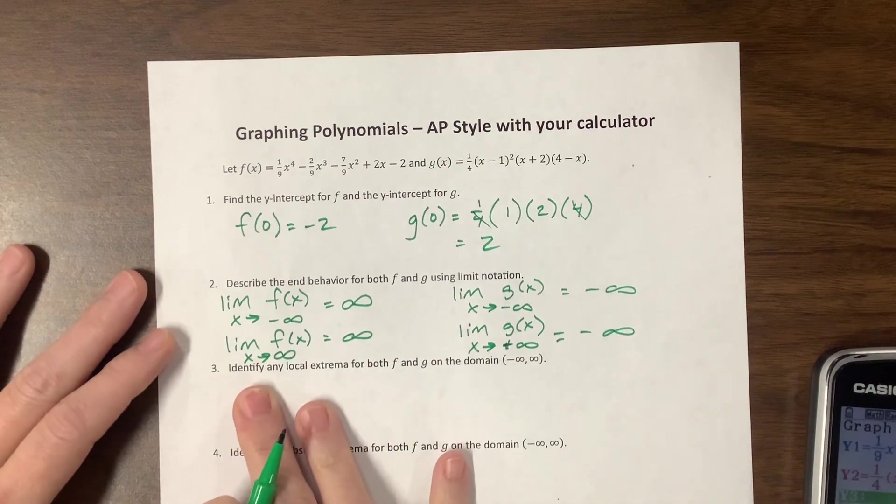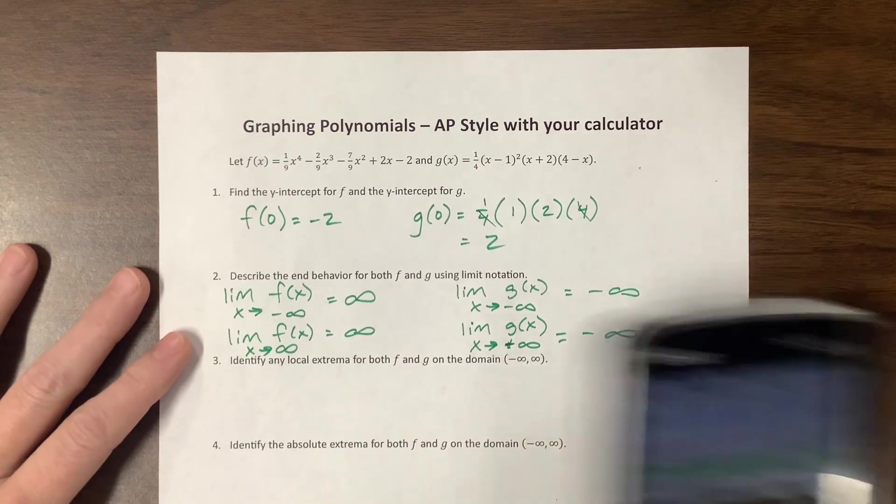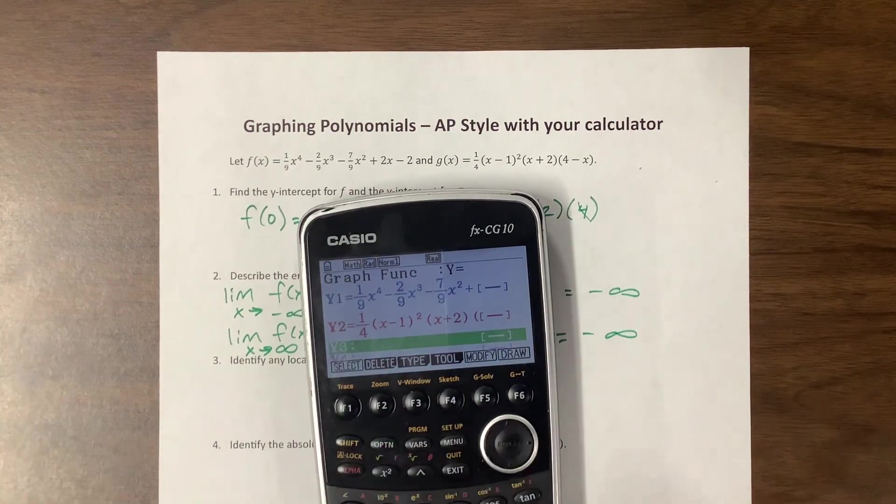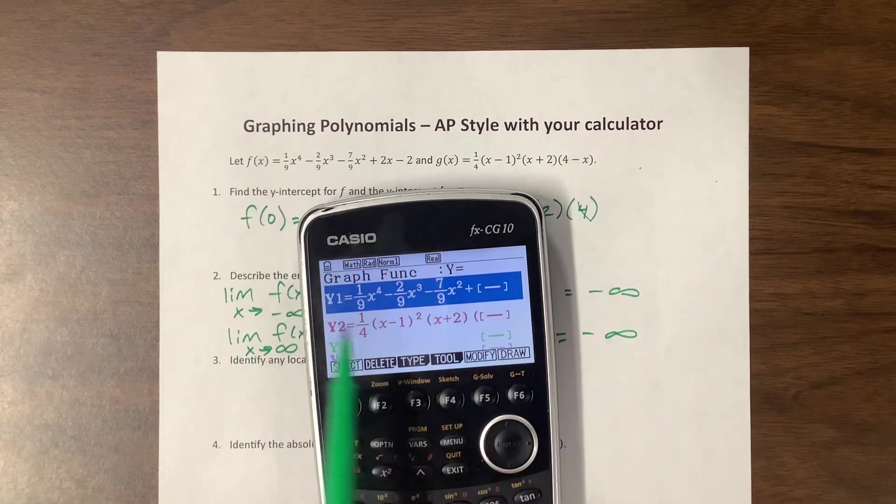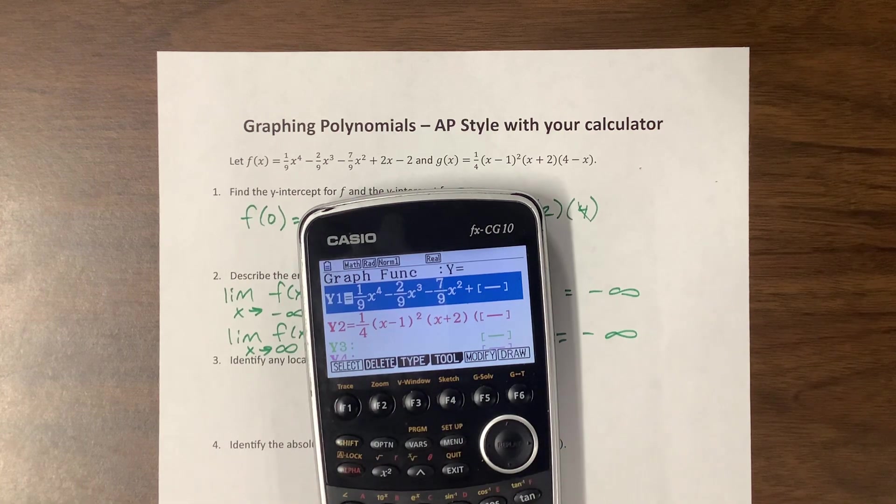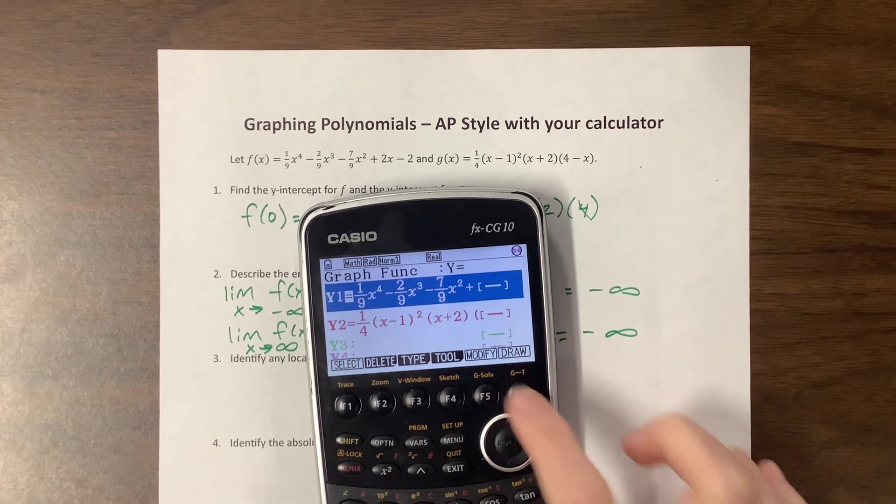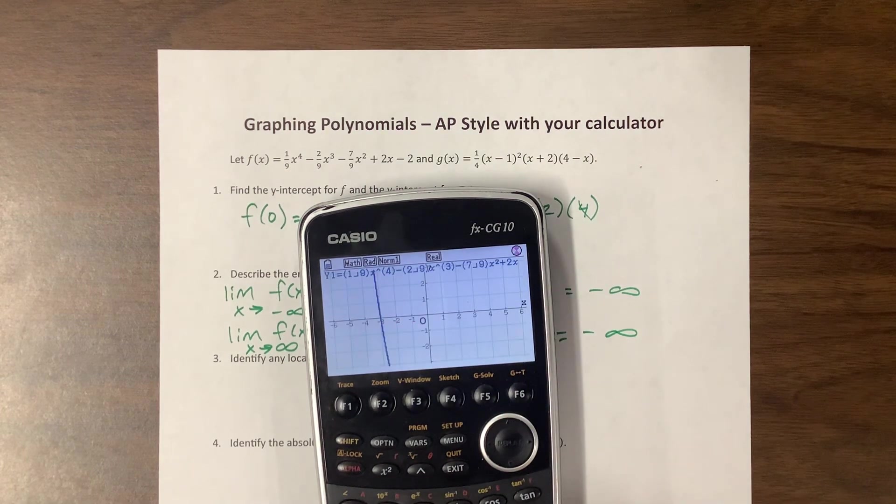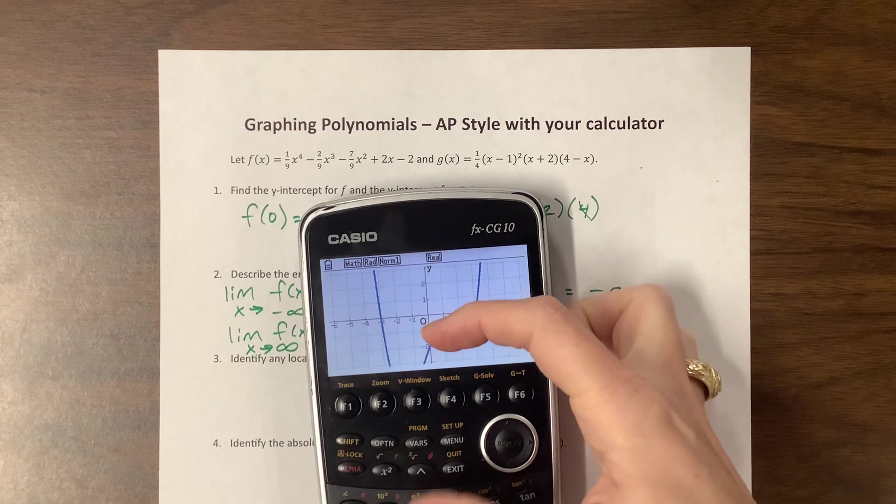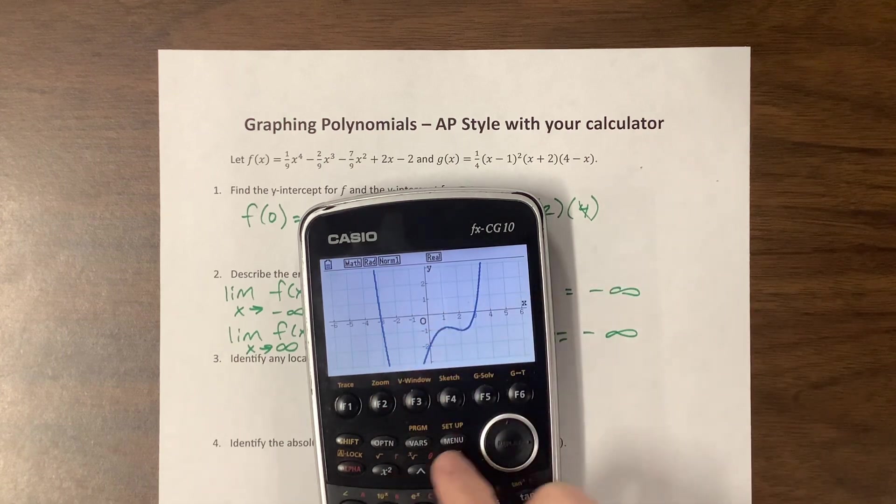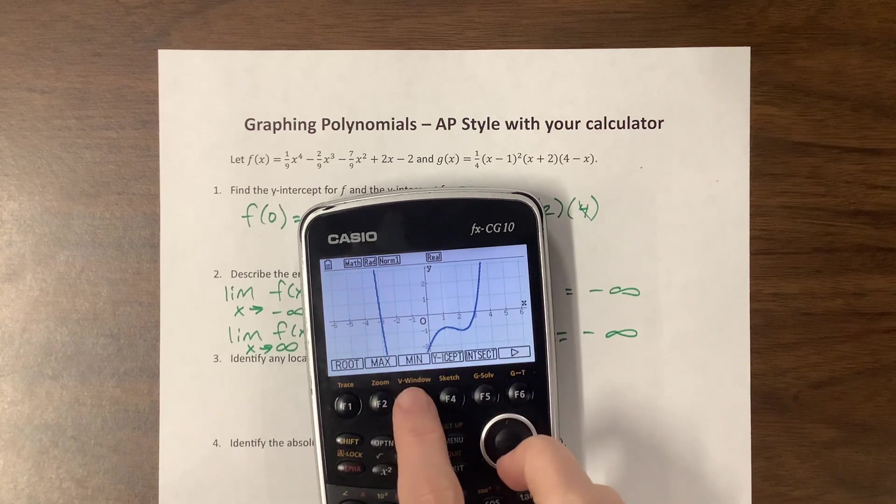So now they want us to identify any local extrema for both f and g on the domain of all real numbers. Here is where I'm going to grab my calculator. I already typed them in, so you don't have to watch me. I have them where they're not selected. You can see that the equal signs aren't highlighted. If I hit select, it'll turn that on for me. I don't know that I want to look at both of them at the same time. It's a little much.